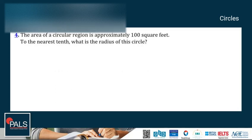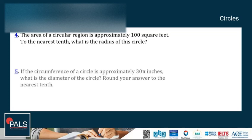Question number four: the area of a circular region is approximately 100 square feet. To the nearest tenth, what is the radius of this circle? Question number five: if the circumference of a circle is approximately 35 inches, what is the diameter of the circle? Round your answer to the nearest tenth. So both of the questions need to be rounded to the nearest tenth.